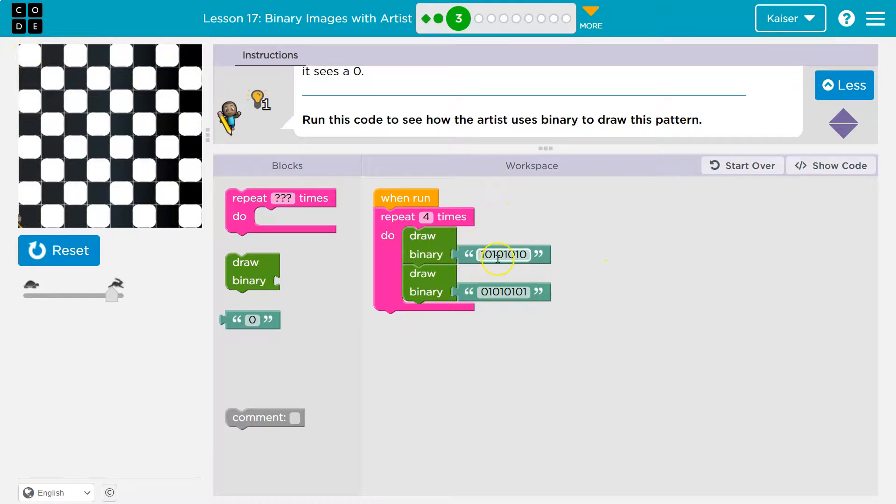It fills in there - that's a one. Then we have a zero next, skips that one. Zero. Fills in there because the one's next, and it keeps going all the way down.